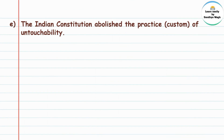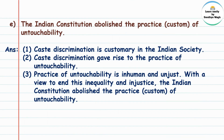The Indian constitution abolished the practice or custom of untouchability. Caste discrimination is customary in Indian society, and caste discrimination gave rise to the practice of untouchability. The practice of untouchability is inhuman and unjust. With a view to end this inequality and injustice, the Indian constitution abolished the practice or custom of untouchability.